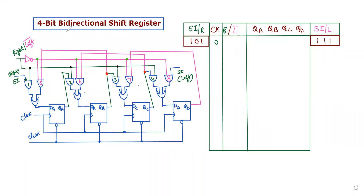In this video I will discuss about a four-bit bidirectional shift register. A register is a type of sequential circuit used to store binary data. Binary data storage requires memory elements as components. The basic memory element is a flip-flop, which can store only a single bit of binary data at a time — either 0 or 1.